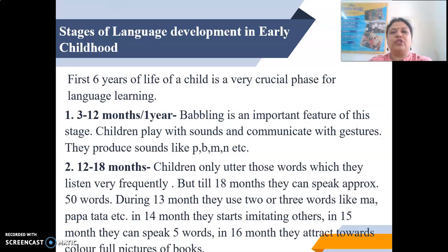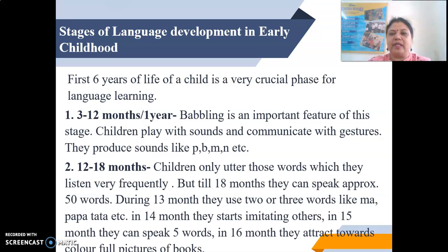Now, what are the stages of language development in early childhood? The first 6 years of life of a child is a very crucial phase for language learning. If we divide these 6 years into months, we can see the various types of language development that take place. Initially, from 0 to 3 months, babbling is an important feature. Children play with sounds and communicate with gestures.